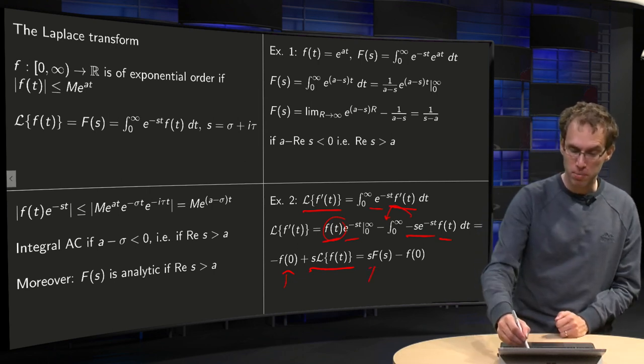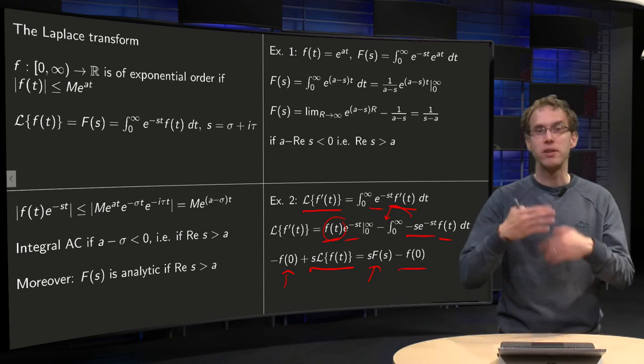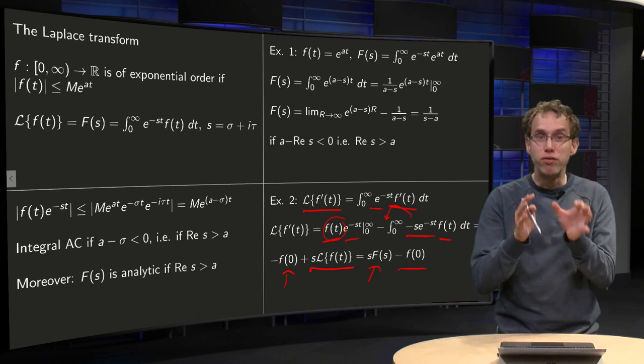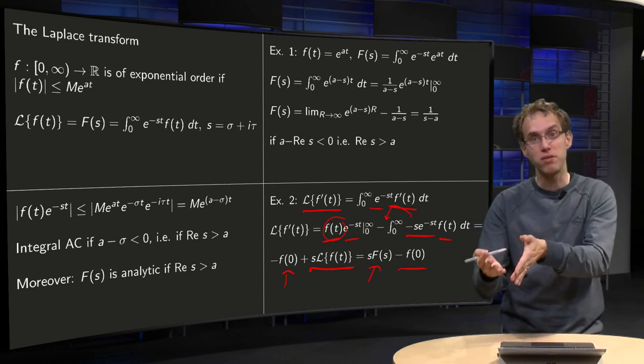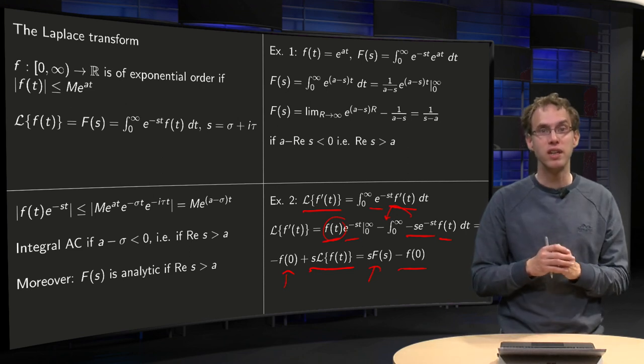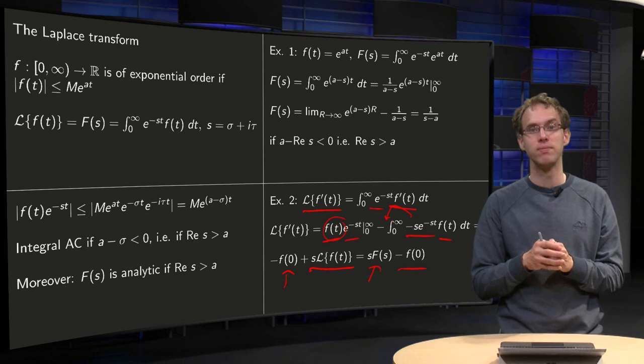So what do you get for your Laplace transform of F prime? Well, s times the Laplace transform of F, so s times F(s), and minus F(0). So in this way you can convert Laplace transform of derivatives into the Laplace transform of the original function, and that is how you are going to use it in solving differential equations. All right, thanks so much.